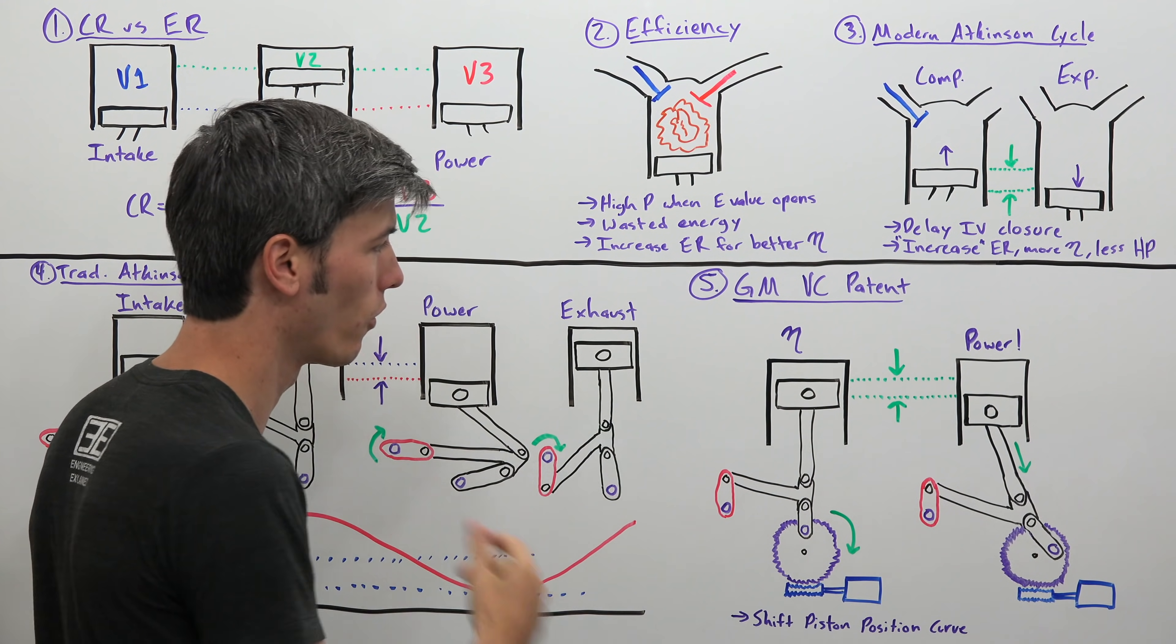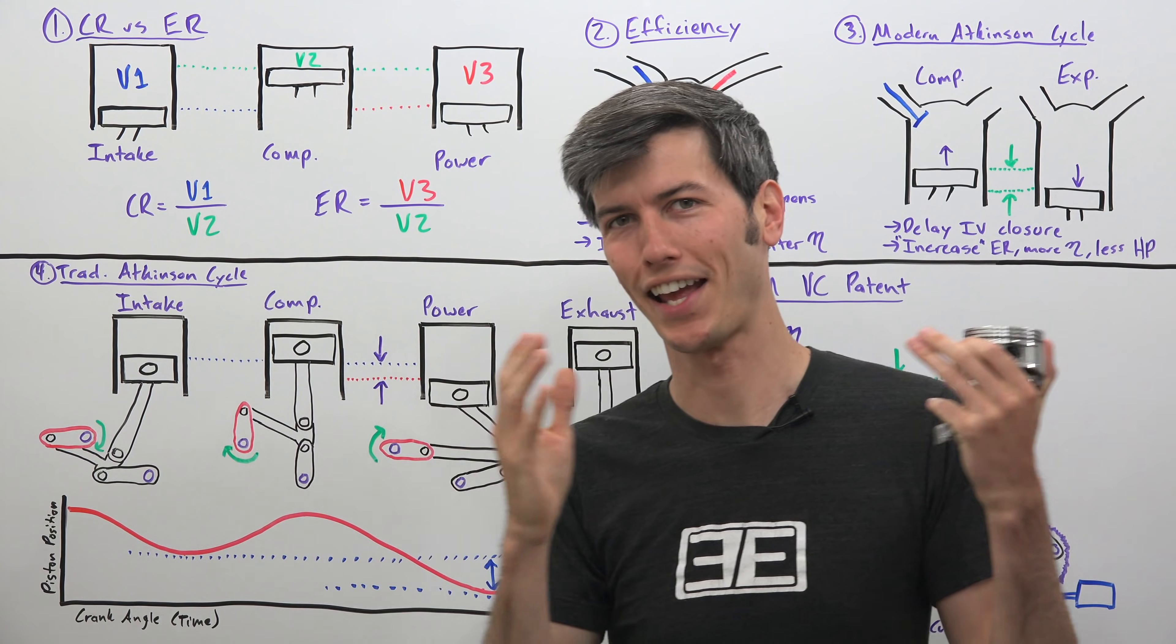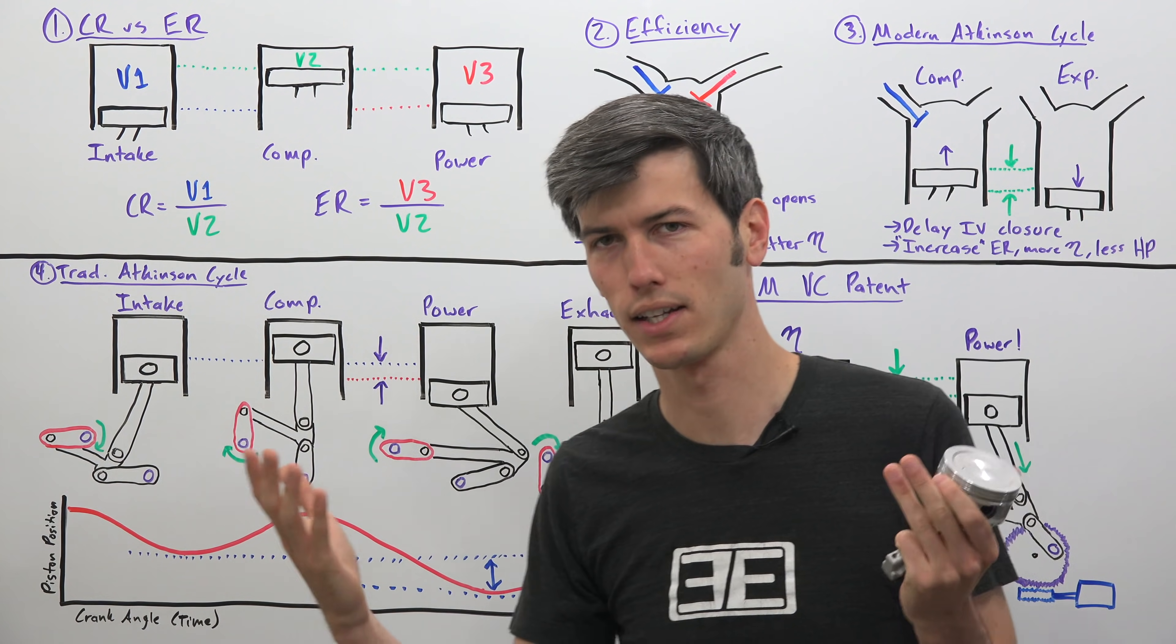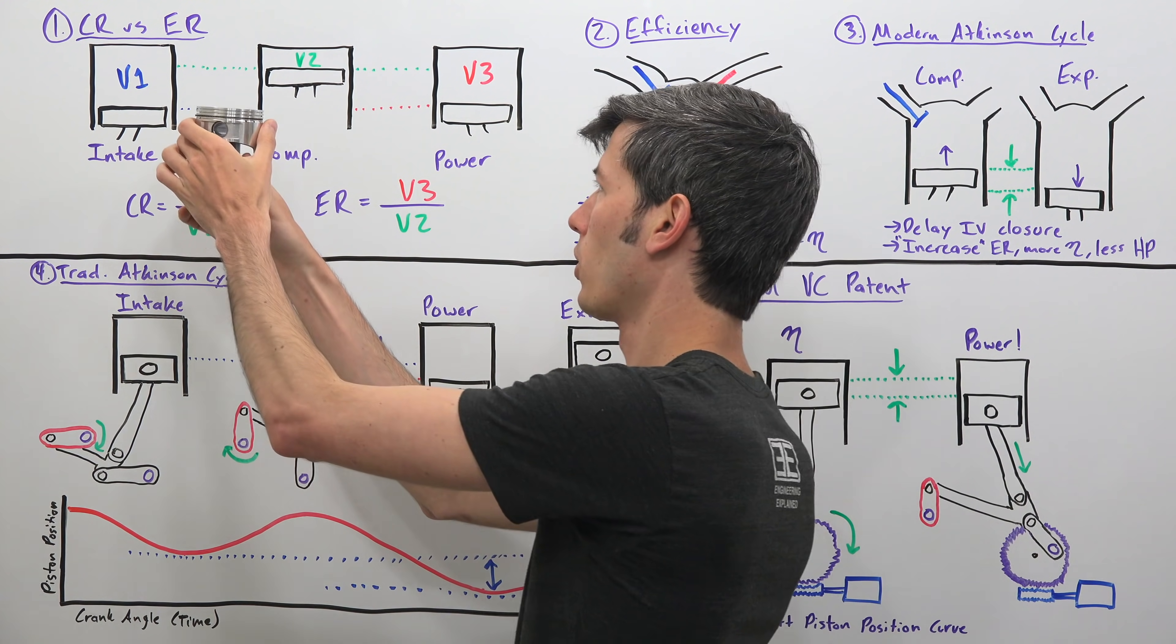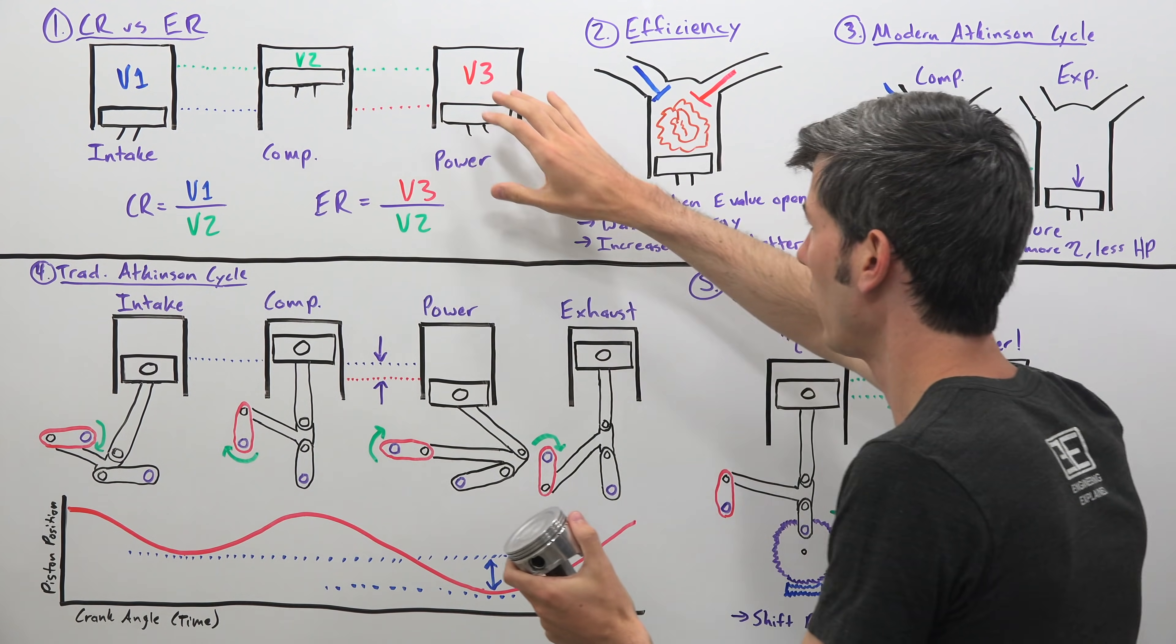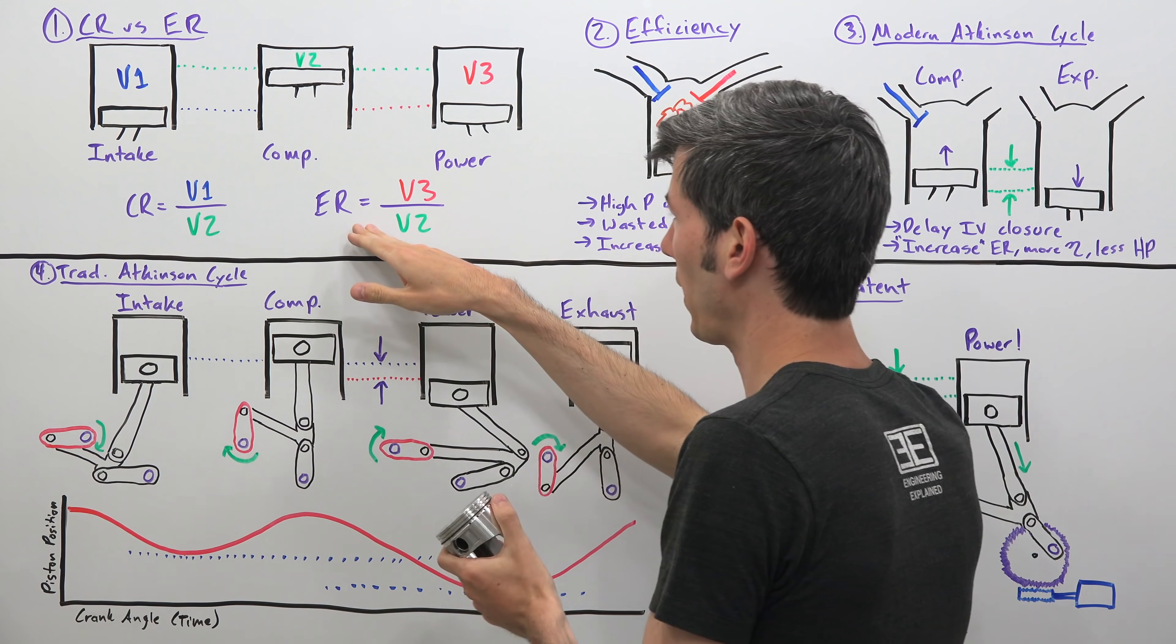This patent dates November of 2018. Now GM's engine has independent compression and expansion ratios. So the first thing we need to understand is what's the difference? So a typical engine will have your four strokes intake, compression, power, exhaust, and so here we've got that laid out and we're going to illustrate what the difference is between a compression ratio and an expansion ratio.